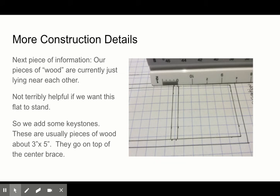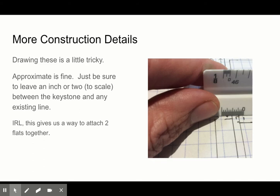Which is all well and good except right now they're just pieces of wood lying next to each other. So that's not terribly helpful. So we're going to add some keystones. And these are pieces of wood about three inches by five inches. They go on top of that toggle or center brace. They can be made out of leather or other things. It's going to be a little tricky to draw these.